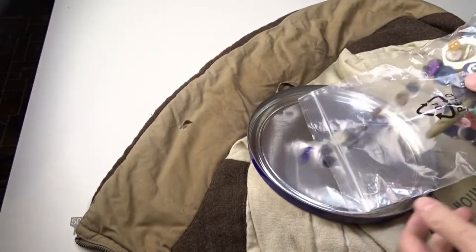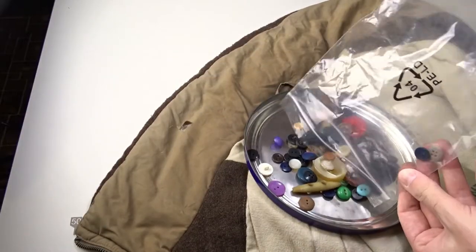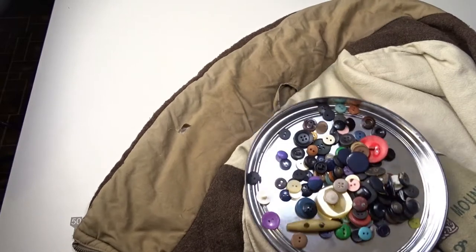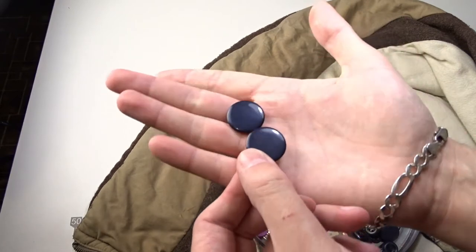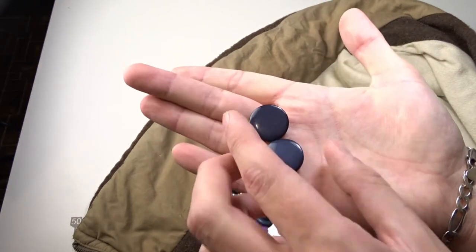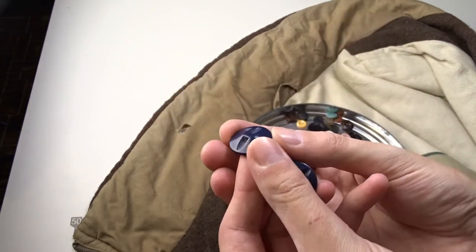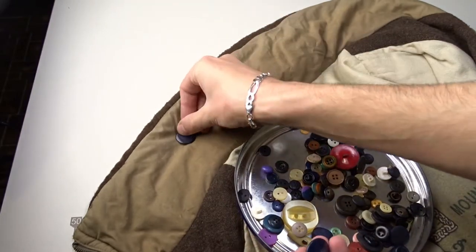To hide the hole I will use two large decorative buttons. The buttons must be smooth because otherwise the jacket won't be comfortable to wear. I found two suitable dark blue buttons in my box. They are very beautiful.